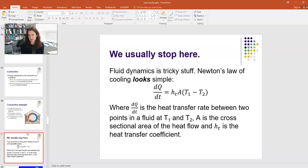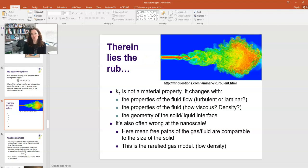Oh, well. The problem is that h sub t isn't just some cool number that you can pull out of a table somewhere. It's not really that simple. It's not a material property. h sub t changes all the time with everything. It changes with the properties of the fluid flow, whether it's turbulent or whether it's a laminar fluid flow. Laminar is shown here on the left, nice straight fluid flow, turbulent, lots of eddies and things going on there on the right. So, the properties of the fluid flow affect h sub t.